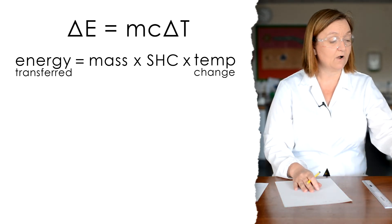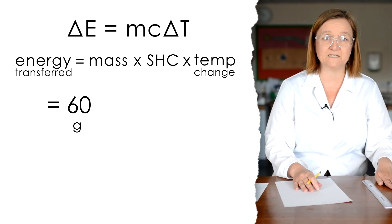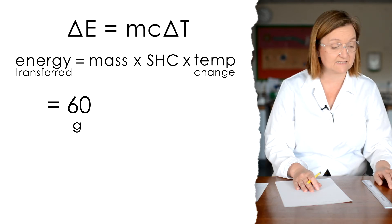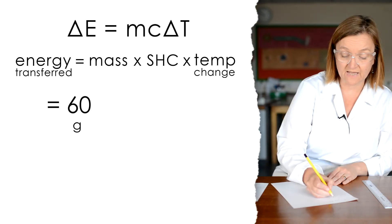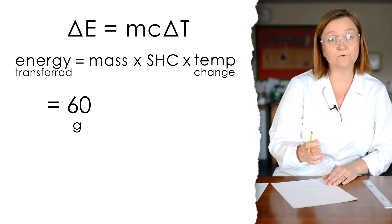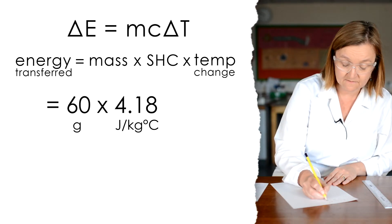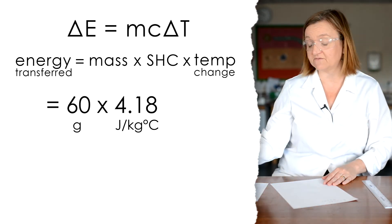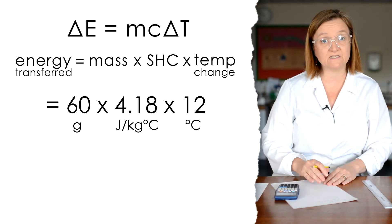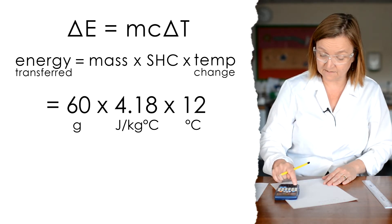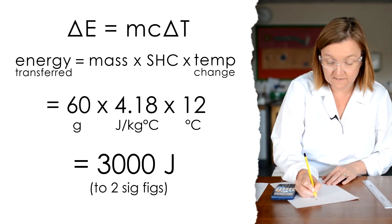Now, the mass of the solution we can take as 60 grams. My total volume was 60 centimetres cubed, if you remember, 40 centimetres cubed of the alkali and 20 of the acid. And we will assume it has the same density as water. That is an appropriate assumption. So that is 60 grams. We can also assume the specific heat capacity of the solution is the same as that of water, which is 4.18. And then my temperature change is what I've taken from my graph is 12. Now, that gives me energy transferred to the solution as 60 multiplied by 4.18 multiplied by 12, which is 3000, and that's joules.